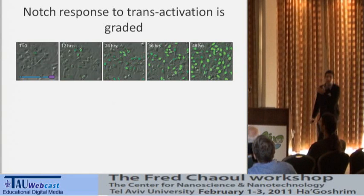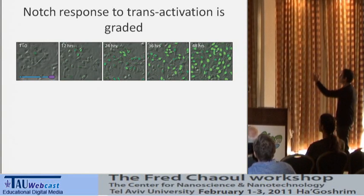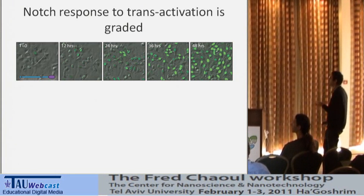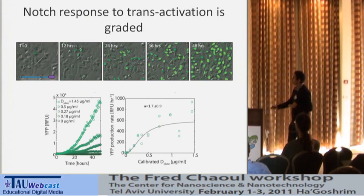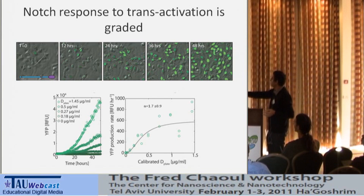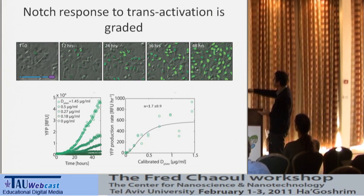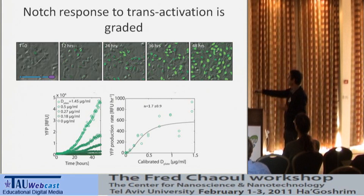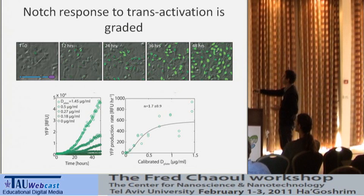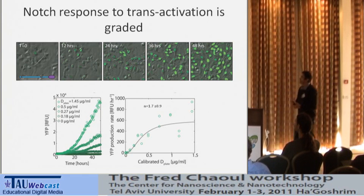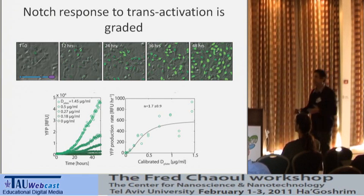Going back to the movie — we have a film strip showing our analysis. We track single cells and obtain fluorescence as a function of time. The top curve corresponds to the movie I just showed. We repeat this for different levels of trans-Delta, getting different curves with different slopes. Plotting the slope — the production rate, the output of the signaling pathway — as a function of plate-bound Delta, and fitting to a Hill function, we get a Hill coefficient of somewhere between 1 and 2. So the Notch signaling response to trans-Delta is pretty graded.